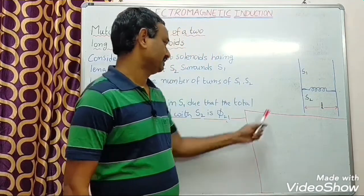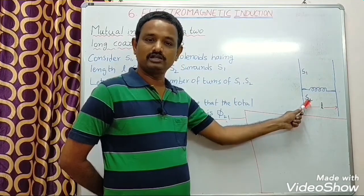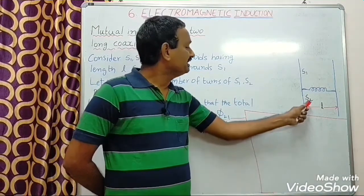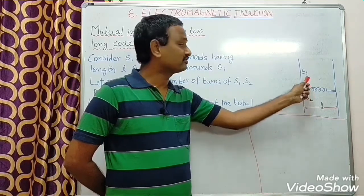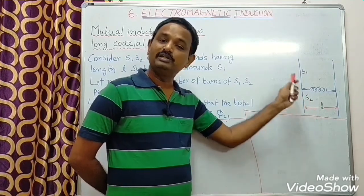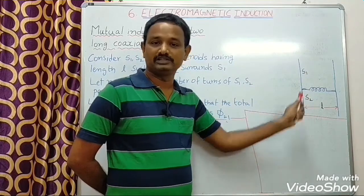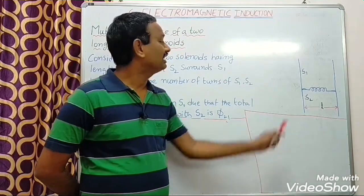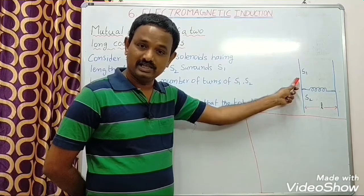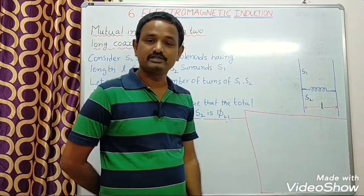Look at here. Let S1 and S2 be the two solenoids having the same length L, such that S2 surrounds S1. Let small n1 and small n2 be the number of turns of solenoid S1 and S2 per unit length. First, suppose current I1 is flowing through S1. Due to that, the total magnetic flux linked with S2 is Φ21.